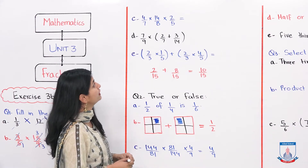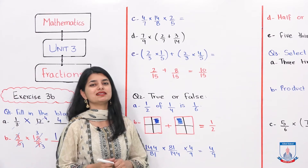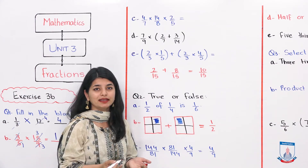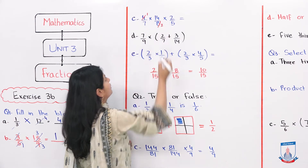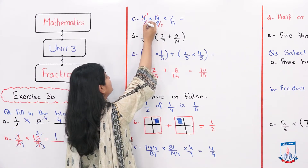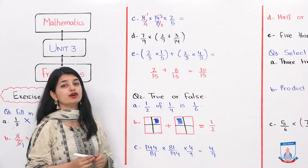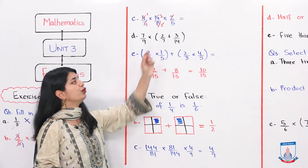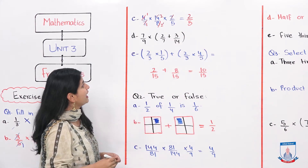The next question is 4 into 7 into 14 by 8 into 2 by 5. We can cancel out: 4 and 8 divide by 4, leaving 1 and 2. Then 7 and 14 divide by 7, leaving 1 and 2. So we have 2 over 2 into 2 over 5. The 2s cancel, giving us 2 over 5. Your answer is 2 by 5.